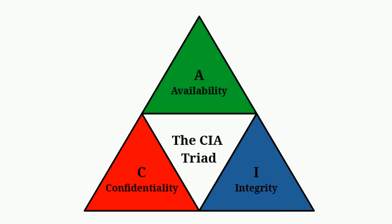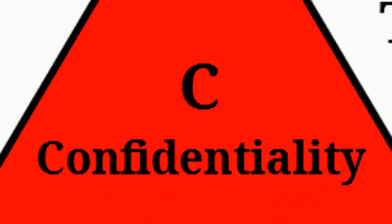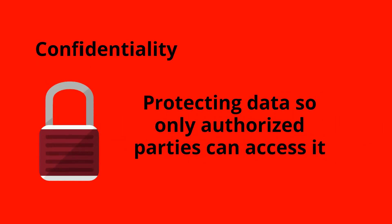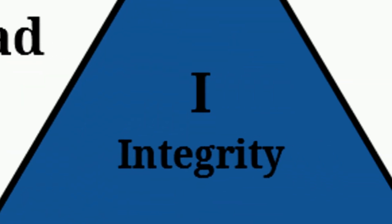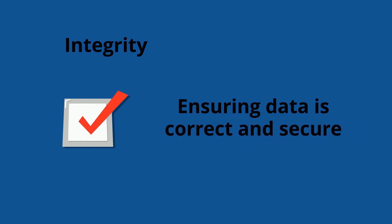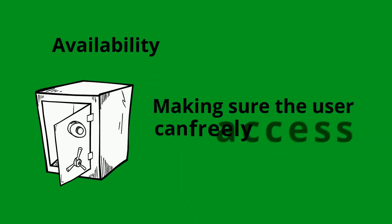The first point on our CIA Triad is Confidentiality, and this means that the data can only be accessed by the authorized parties. Second is Integrity, and that makes sure that the data can be trusted and that nobody has tampered with it. Last, we have Availability, and that means that the data is there when it's needed to be.